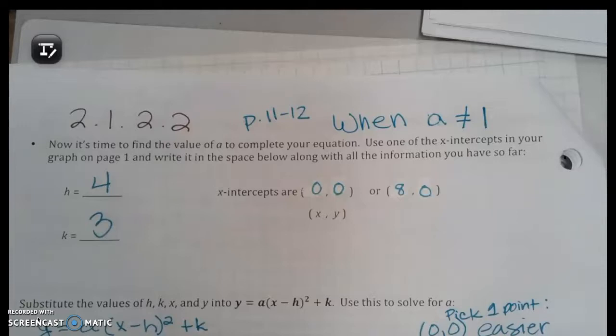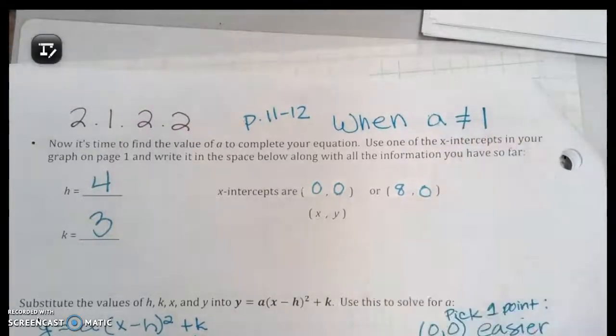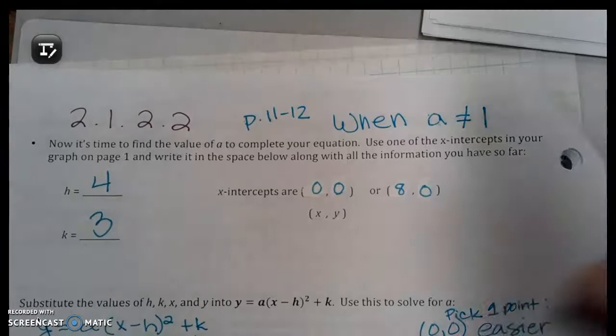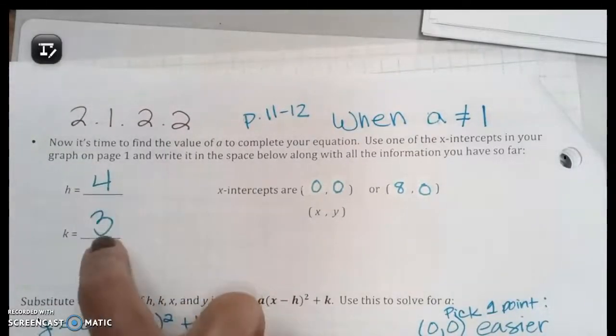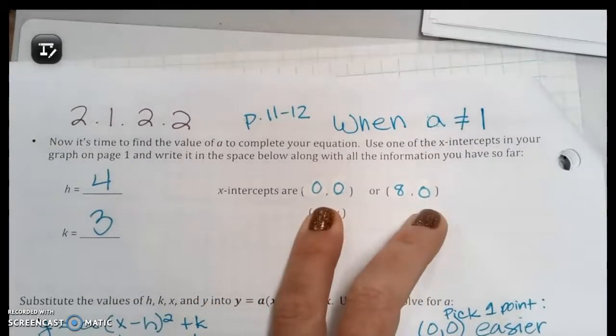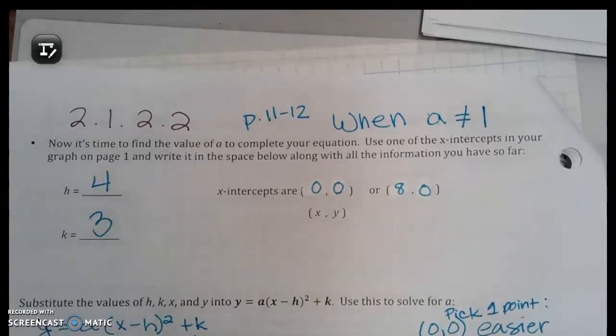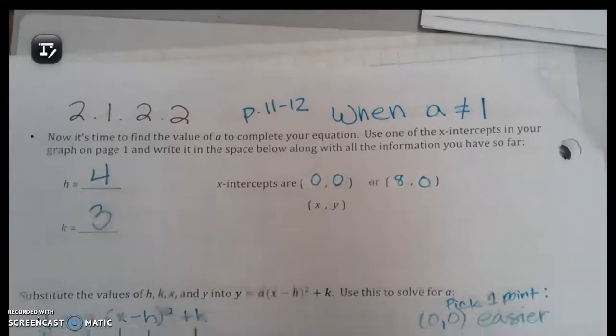That's because your a was not one, obviously, or even in this case negative one to open down. But it ends up being like a fraction or you could have even typed a decimal in there because a fraction could be converted to a decimal, right? So I'm going to teach you today how to find that a using your vertex and one of your intercepts. It's kind of like when you're given the slope and a point on a line you can use it to get the b, the y-intercept. It kind of works like that.